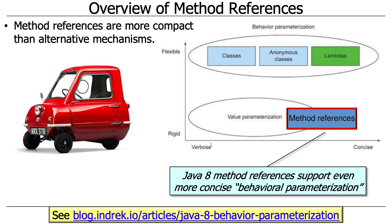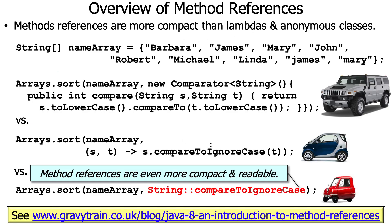Method references are really good because they're even more compact than lambda expressions, but they're not quite as flexible. In the taxonomy of behavioral parameterization, lambdas are very concise but flexible, while method references are very concise but a little more rigid because you just name them. Recall our example with the array of string names — we had the verbose anonymous inner class approach, then the more compact lambda expression, and now an even more compact method reference.